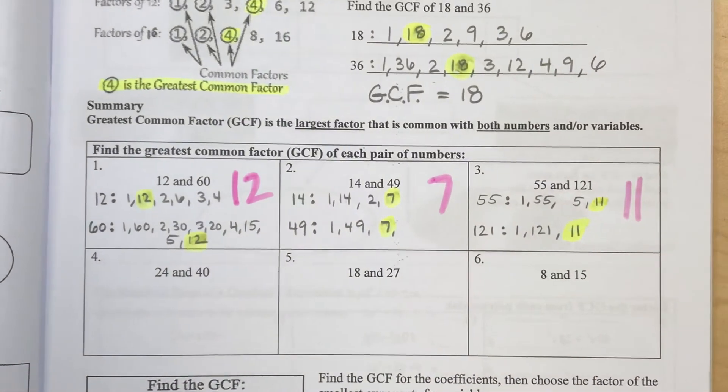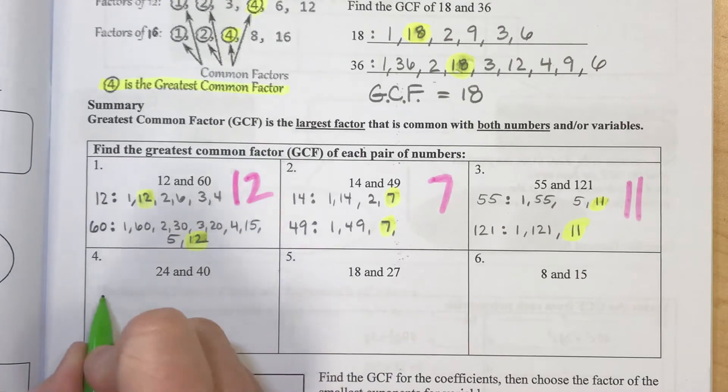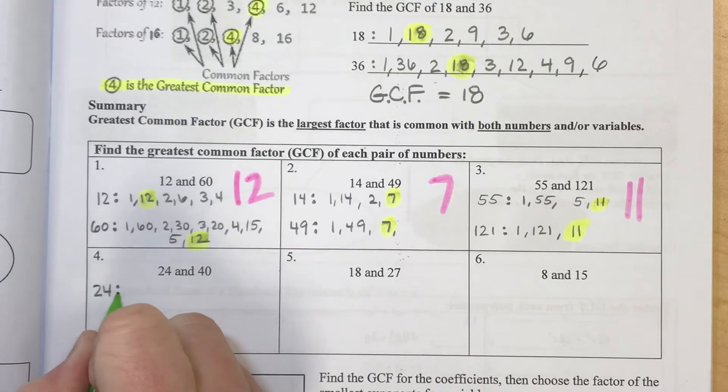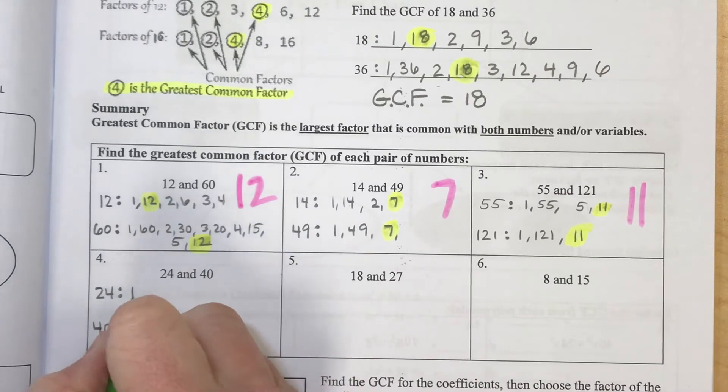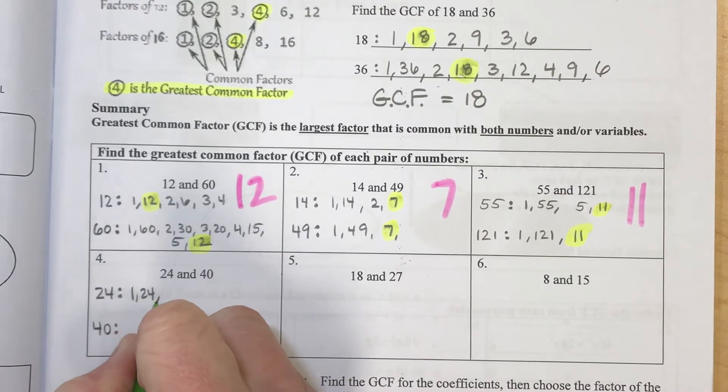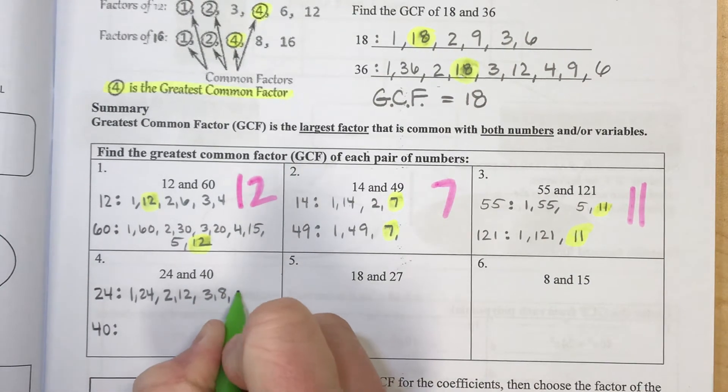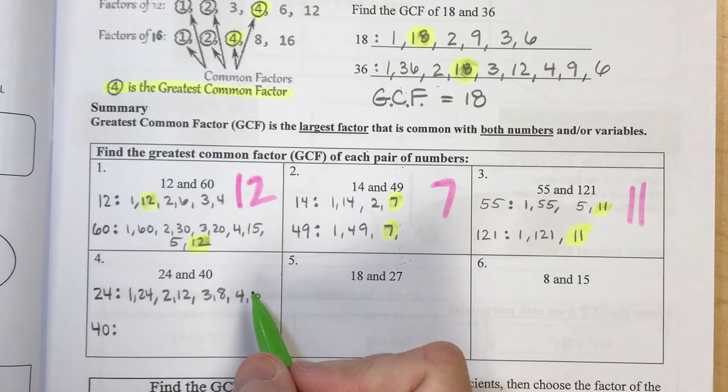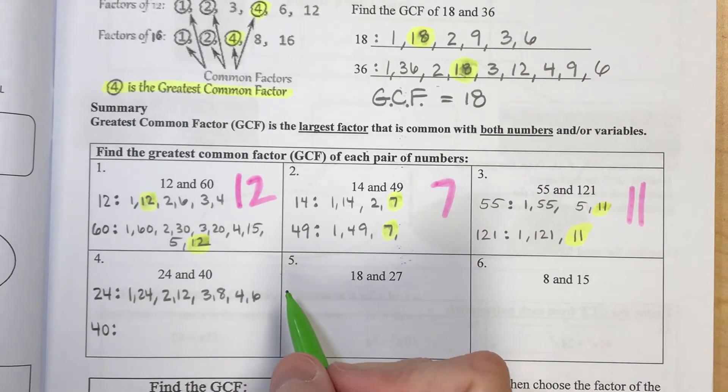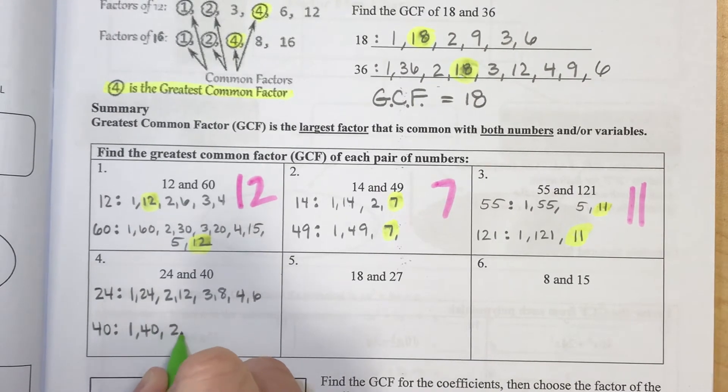And here's three more. Maybe what you want to do is pause the video and see if you can find them yourself. Between 24 and 40. Let's see the numbers 1 and 24, 2 and 12, 3 and 8, 4 times 6. I think that's about all I can think of right now. Okay, 40. 1 and 40, 2 and 20.